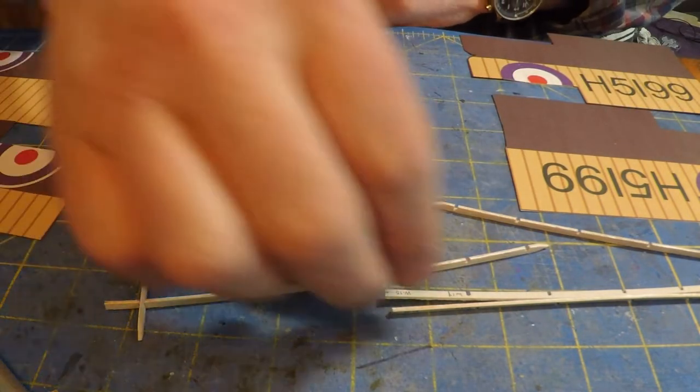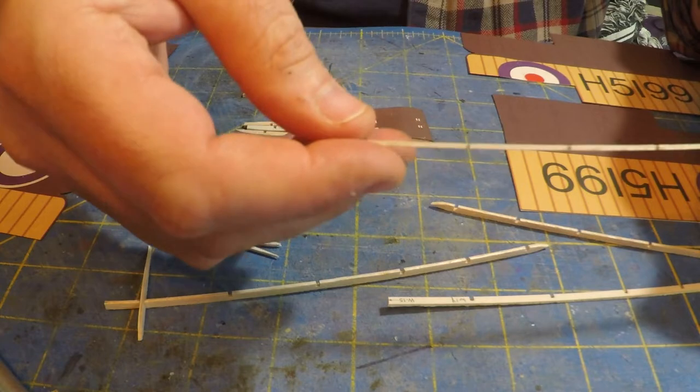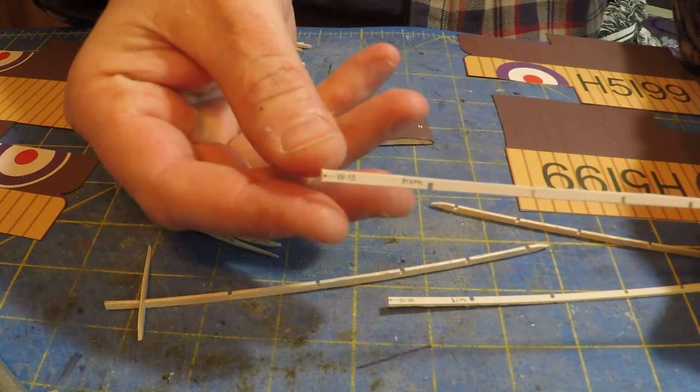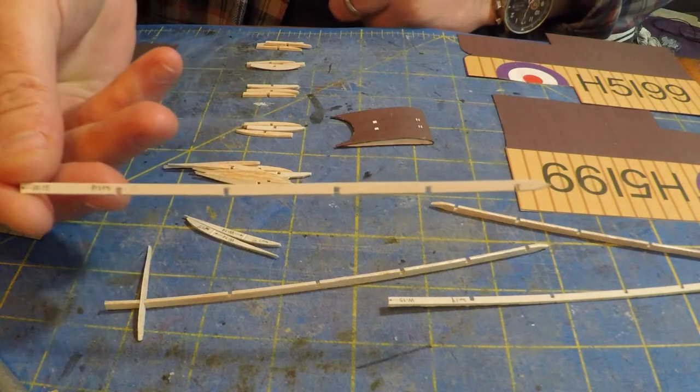So here's a spar, it's out of balsa wood, and you can see the little number there and the notches that go all the way up to the edge. That is for the top wing panel.